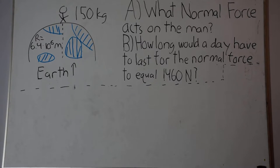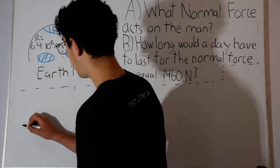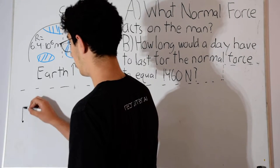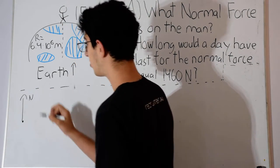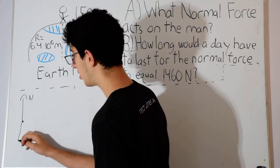Let's start by drawing a free body diagram of the forces acting on the man. There's the normal force upwards and the force of gravity downwards.